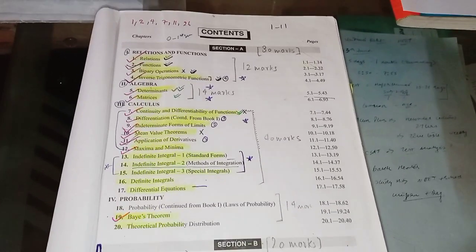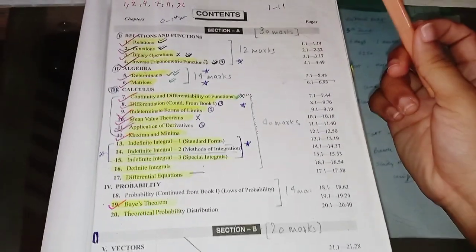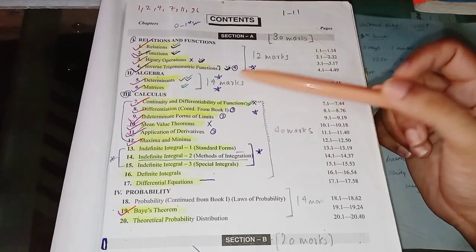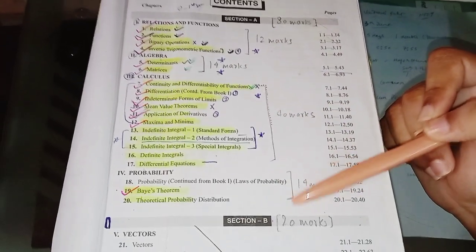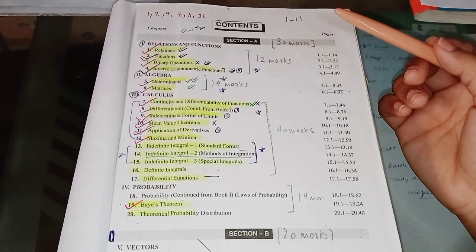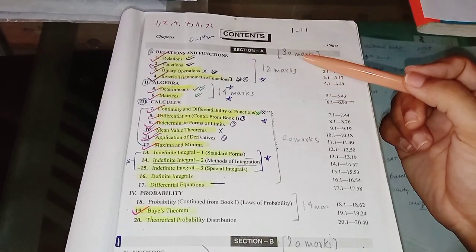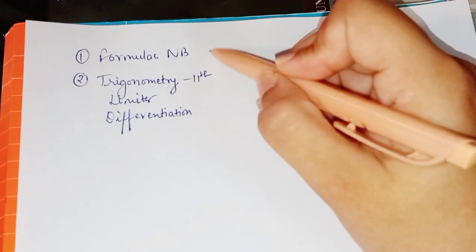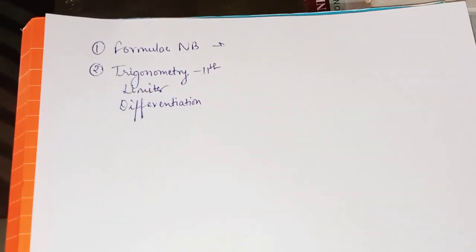Now, the first thing you can do is write the marks distribution as I've written. This is of 12 marks, this is of 14 marks, and this is of 40 marks, so 14 marks again. Section B or section C which you can attempt is of 20 marks. Marks distribution is very important in this case. And yes, a very important thing is that you have to maintain a formula notebook since the beginning of your preparation. I had this formula notebook in which I've written all these formulas of differentiation, then determinants, matrices, integration. There are a lot of formulas in integration and differentiation which you have to learn. So maintain a formula notebook.